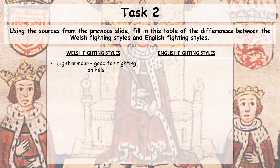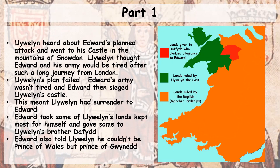We should be back now from completing that table. Llewellyn had heard about Edward's planned attack and went to his castle in the mountains of Snowdon, up towards the north. Llewellyn thought that Edward and his army would be tired after such a long journey from London and from climbing the hills and mountainous regions to reach him. But Llewellyn's plan failed — Edward's army wasn't tired at all, and Edward besieged Llewellyn's castle. A siege means they lock it down and stop anyone coming in or going out, so farmers couldn't bring food, and slowly their food supplies, weaponry, and arrows were all running short.